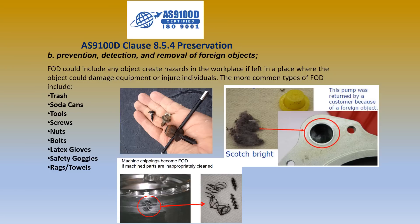8.5.4, Preservation, sub-Clause B: prevention, detection, and removal of foreign objects. FOD could include any objects or items that create hazards in the workplace if left in a place where they could damage equipment or injure individuals. The more common types of FOD include trash, soda cans, tools, screws, nuts, bolts, latex gloves, safety goggles, and rags and towels.